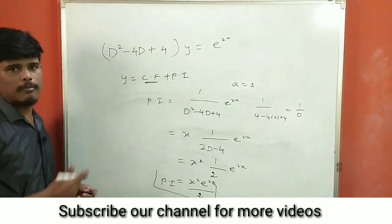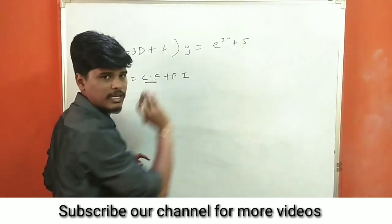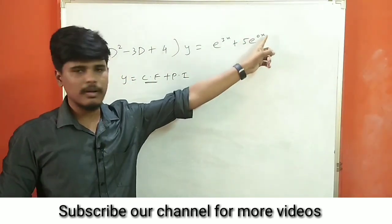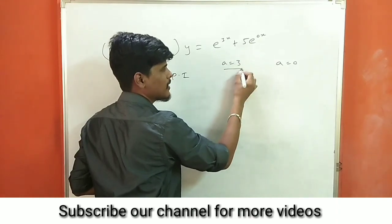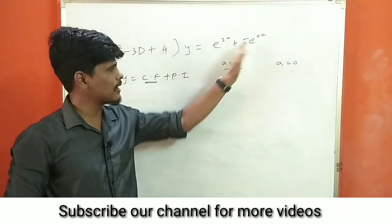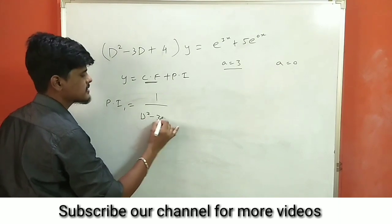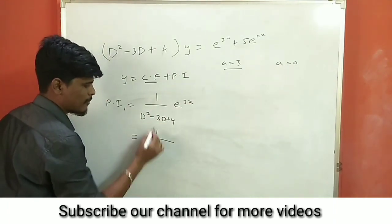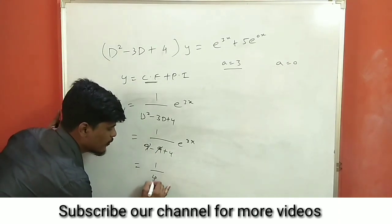This is a different kind of type. Let's see another model. E power x is a constant — so we consider e power 0x. Anything to the power 0 is 1, so e power 0x equals 1. Now let's take the steps. The first particular integral PI1 is 1 divided by D squared minus 3D plus 4, times e power 3x. Substituting D equal to 3: 1 divided by 9 minus 9 plus 4 — the minus 9 plus 9 cancel — giving 1 divided by 4 times e power 3x.